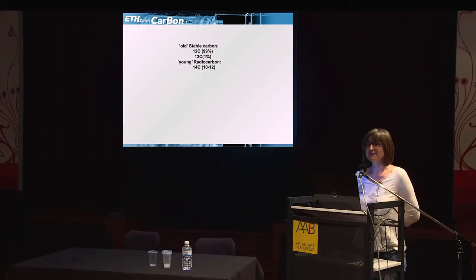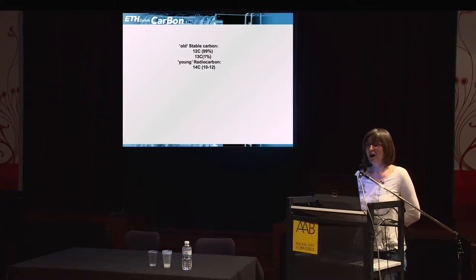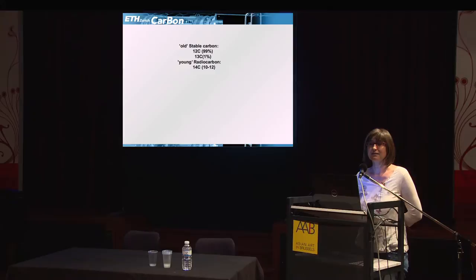You cannot distinguish them by eye. Then we have this young radiocarbon, which is cosmogenic — produced by cosmic radiation. Instead of a percentage, I give you 10 to the minus 12. This is the tiny amount in us which makes us young on top of all this old carbon. So whenever we talk about radiocarbon dating, nowadays we measure C-14 over C-12 — ratios as small as 10 to minus 12, sometimes 10 to minus 14. That's the challenge of radiocarbon.